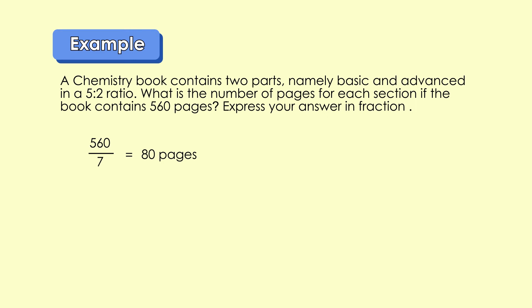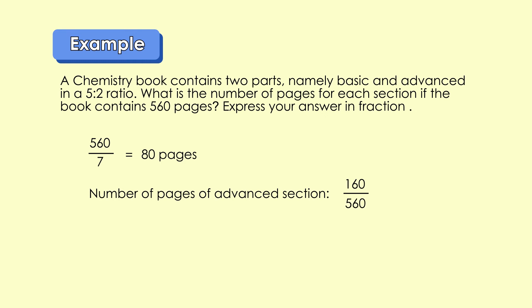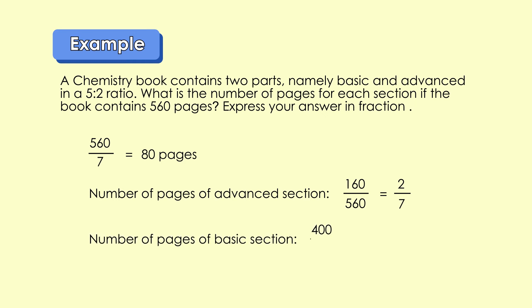How do we represent this in fractions? For advanced, we get 160 pages over 560 pages. 160 over 560 is equivalent to 2 over 7 in the simplest form. Meanwhile, for the basics, we get 400 pages over 560 pages, which is the total pages of the book. 400 over 560 is equivalent to 5 over 7 in the simplest form.